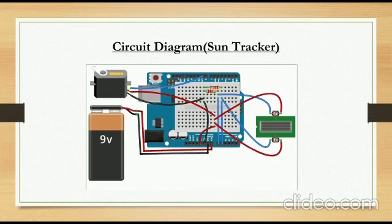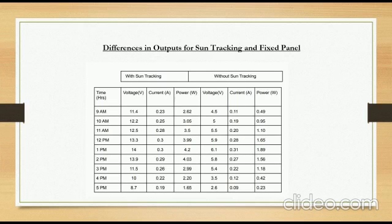Here is the circuit diagram of our sun tracking part. Now, on recording the outputs from the panel at different instances, we can see that the outputs with sun tracking are 2 to 3 times that of a fixed panel.